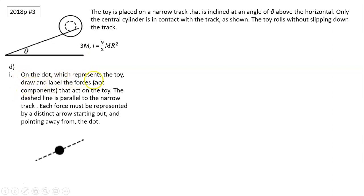D1. On the dot, which represents the toy, draw and label the forces, not components, that act on the toy. The dashed line is parallel to the narrow track. Each force must be represented by a distinct arrow starting out and pointing away from the dot. So on this toy, there's normal force, there's gravity, and there's friction. So on the three forces, remember it's pointing away from the dot. And make sure you label it.